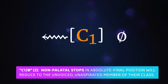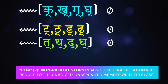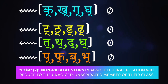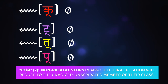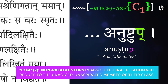Second: when you have non-palatal stops — meaning members of the ka-varga, ta-varga, ṭa-varga, and pa-varga — aside from the nasals, these classes are all going to reduce to their unvoiced, unaspirated lead member of the class. So if we have the word anuṣṭubh, which ends with a bha-kara and is the name of a poetic meter, that bha-kara at the end of the sentence loses aspiration and voicing and reduces down to the pa-kara, leaving us with anuṣṭup.